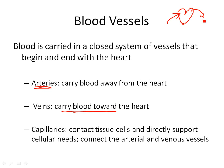In between, you have the capillary system, which connects the arterial and venous system. The capillaries are where we have exchange of gases, nutrients, and waste at the tissue level. So the capillaries connect the two systems and are also the site of exchange for everything that the tissues need.